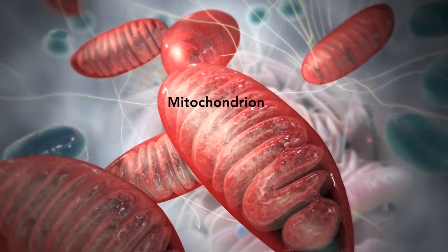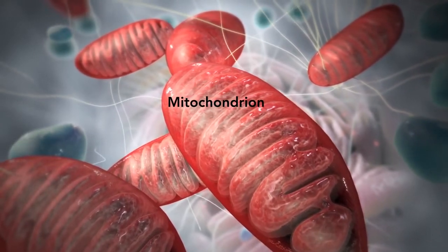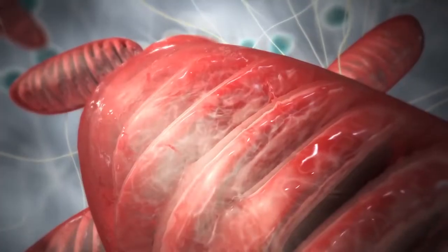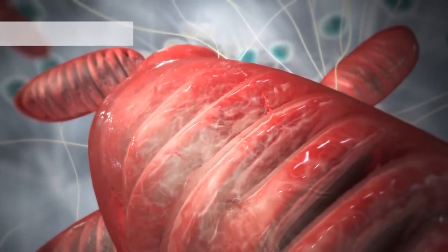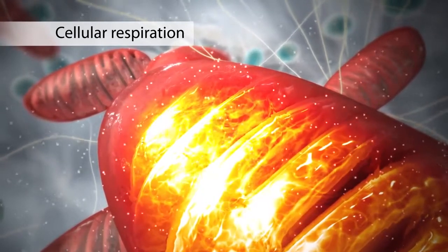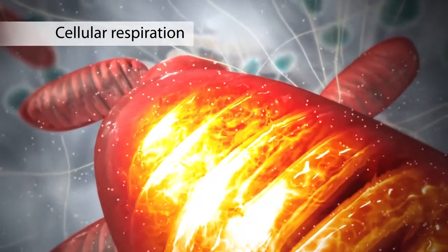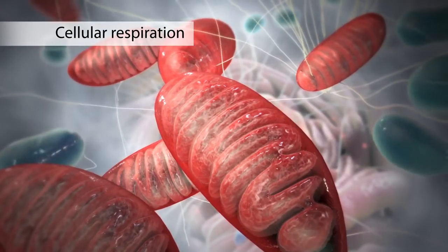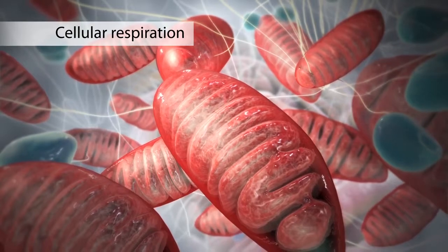The mitochondrion is an organelle that is the powerhouse for both animal and plant cells. During a process called cellular respiration, the mitochondria make ATP molecules that provide the energy for all of the cell's activities. Cells that need more energy have more mitochondria.